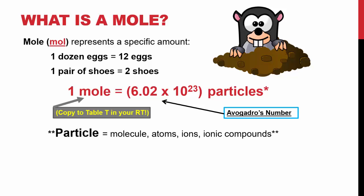Please take out your reference tables and copy this down next to table T. When I say the word particles in Avogadro's number, that means you can have x amount of molecules or atoms or ions or ionic compounds. It really depends on what you're actually analyzing. If you're analyzing water, it's a molecule. If you're analyzing iron, it's an atom. If you're analyzing sodium chloride, it's an ionic compound. And if you're doing aqueous work, you're looking at ions.